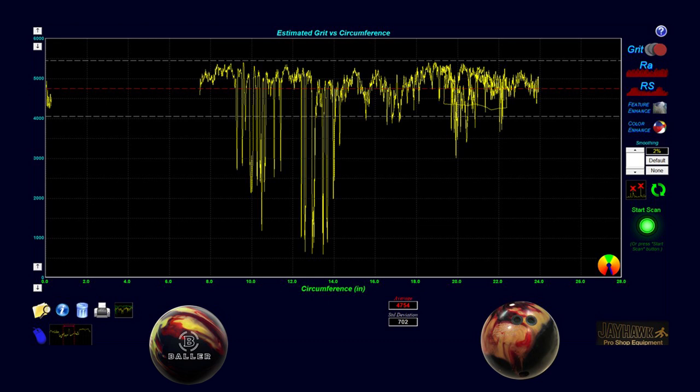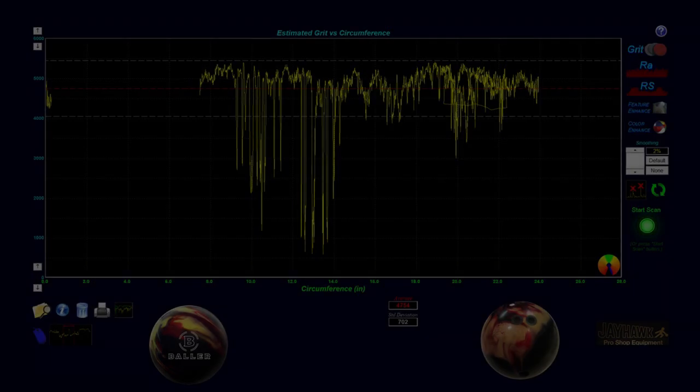Therefore enhancing the ball's ability to hook down lane. The ERT hybrid coverstock not only is a new coverstock that creates more hook potential, it also creates a more consistent reaction on the lanes as well.